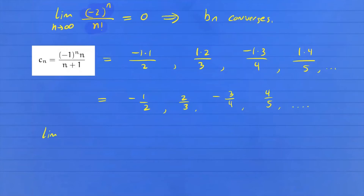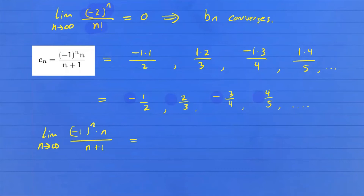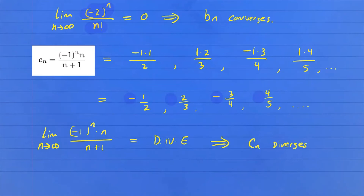If you take the limit as n approaches infinity of negative one to the n times n over n plus one, the values constantly alternate between positive and negative. So there is alternation in the sequence, and therefore the limit does not exist. Since the limit does not exist, the sequence c_n diverges. If the limit fails to exist, or goes to infinity or negative infinity, the sequence diverges.